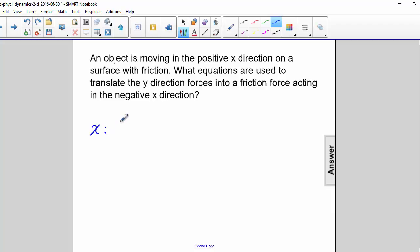In the x direction, we would have force applied minus the force of friction equals ma. And now the force of friction is equal to mu times the normal force.